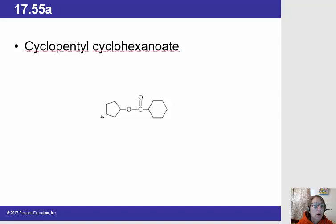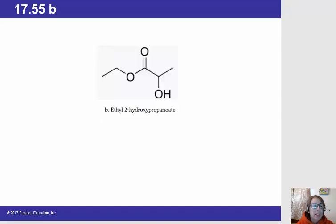And then the second part, if we look at our structure that comes from the acid, the acid would be cyclohexanoic acid. So the name of the ester is going to be cyclohexanoate.